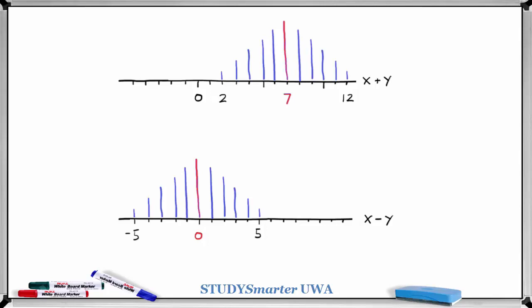So here are the middles of those two distributions. And as you can see, the spread either side of the middle in each case is exactly the same, which means the variance of x plus y and the variance of x minus y have to be the same.